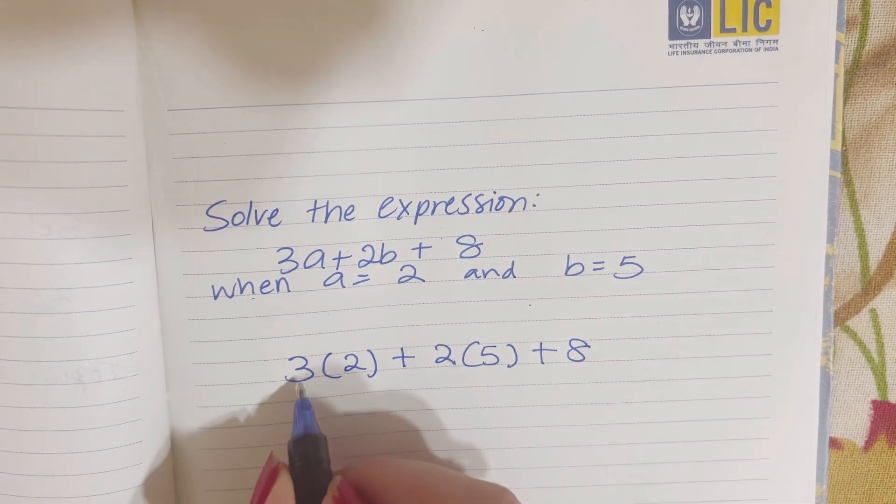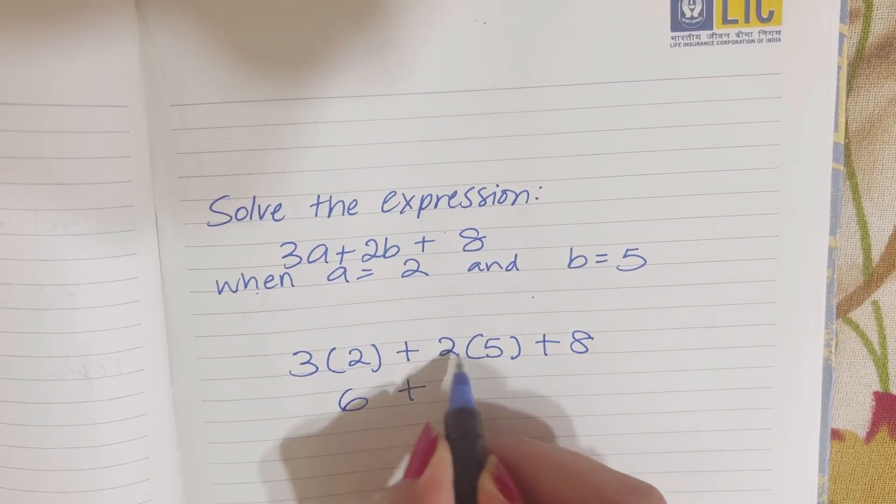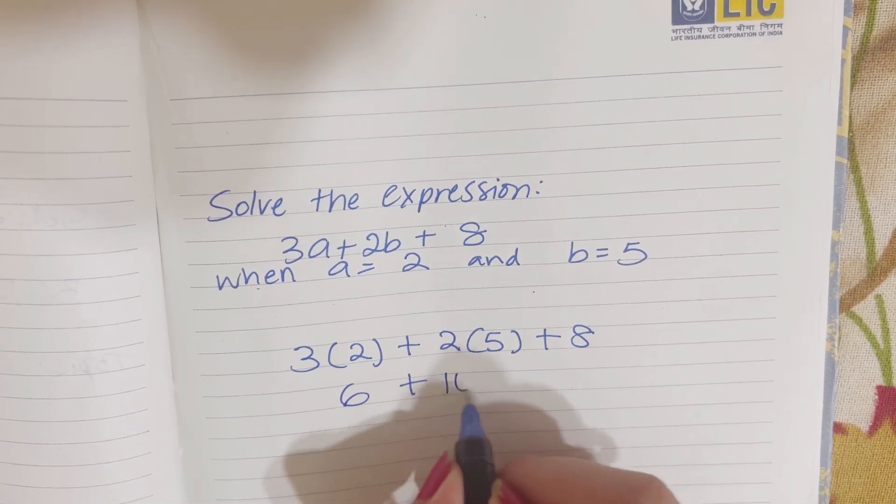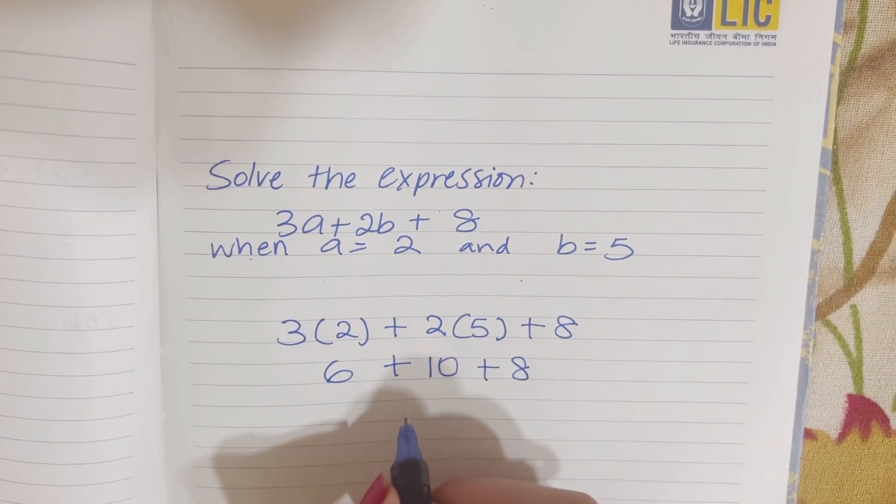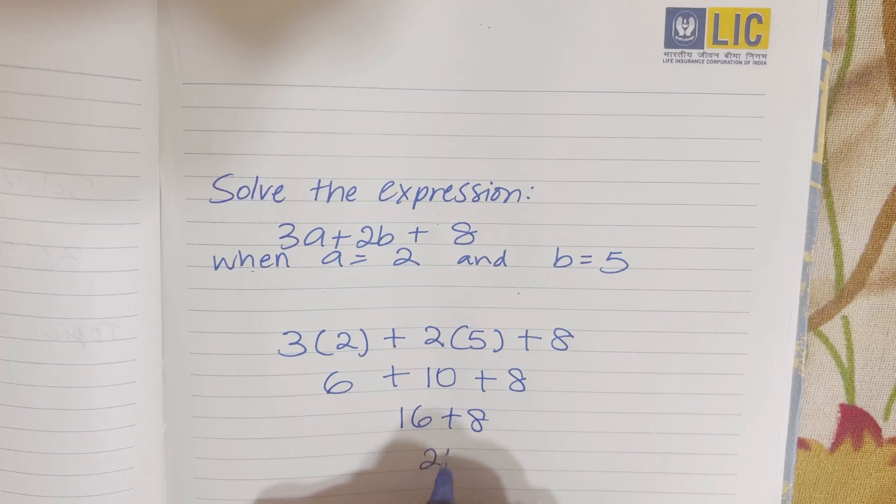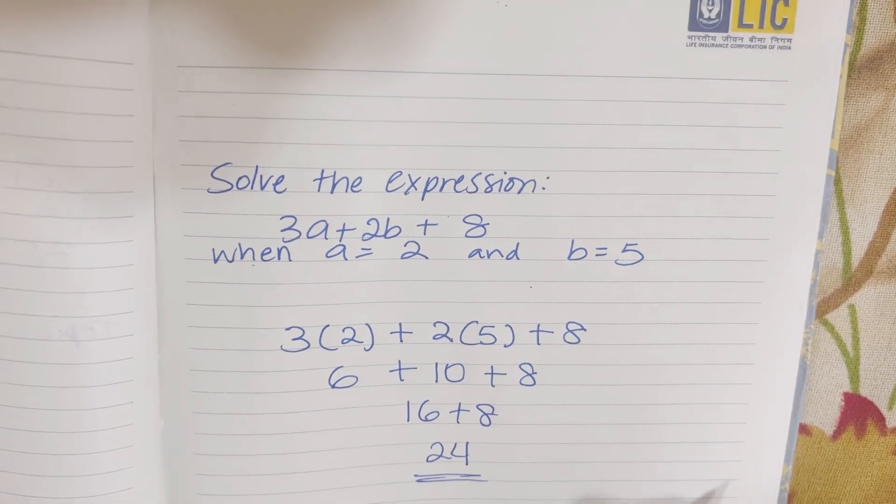So you do 3 multiplied by 2 is 6, plus 2 multiplied by 5 is 10, plus 8. Now you add this up: 16 plus 8 equals 24. That's it. Very easy.